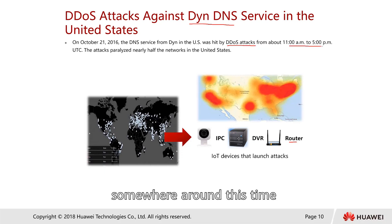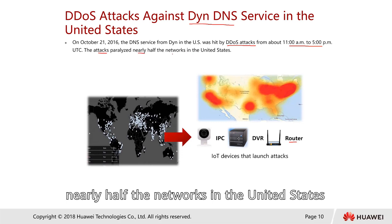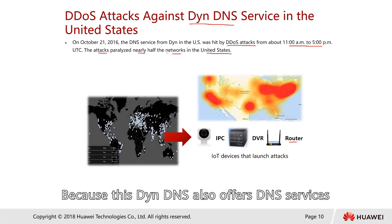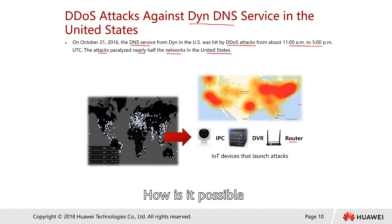So if the DNS service was attacked — and it was hit by a DDoS attack somewhere around 11 a.m. to 5 p.m. UTC time — this attack paralyzed nearly half of the network in the United States. Dyn DNS also provides DNS services to the public, apart from updating the dynamic DNS.